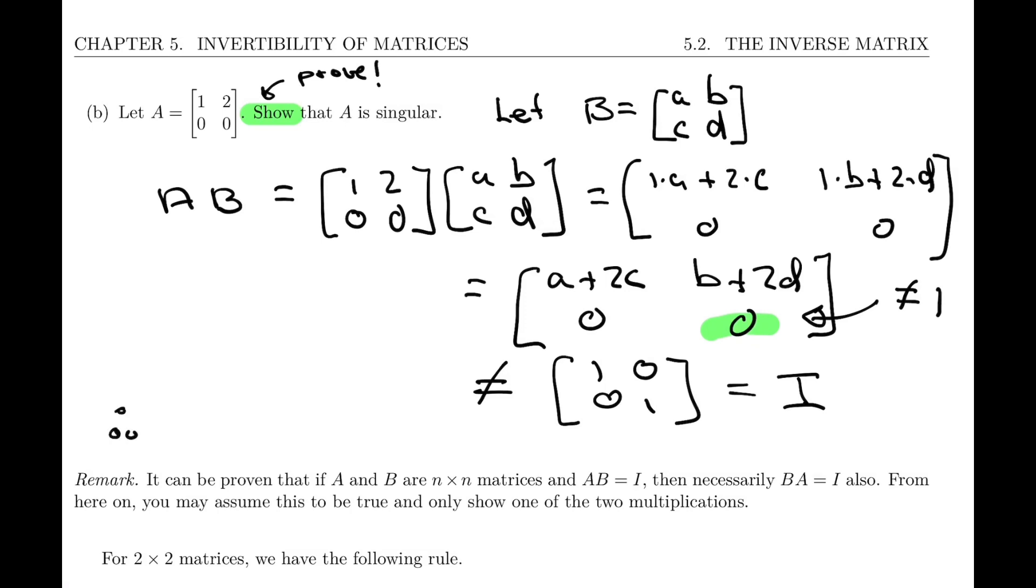And therefore, our conclusion is that there is no matrix B, such that AB equals BA equals I. And that proves that A is singular.